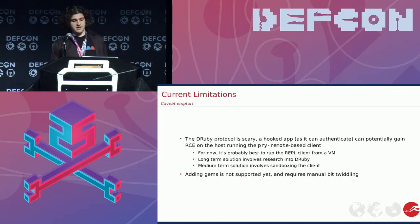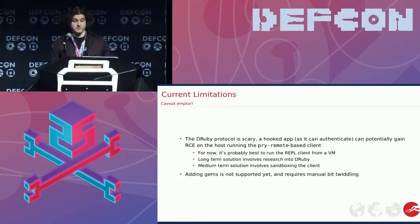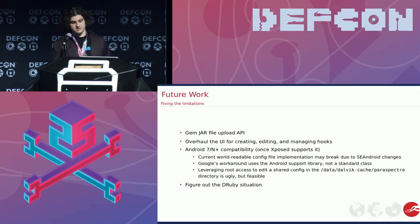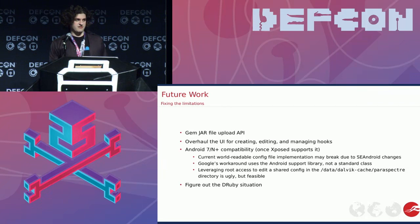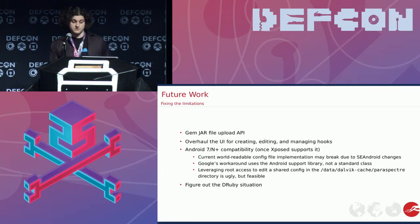Limitations: the DRuby stuff is super scary — I'm going to get to it, that's probably going to be its own talk, since it's just super, super dangerous. Adding gems is not quite supported yet and requires some shenanigans — I'll probably get around to that soon. I might make a UI to do it fancier, or might just make it easier in the build process. The UI could use just a little bit of work. Android 7 compatibility isn't there yet because Xposed doesn't support it yet — if and when it does, I know what I have to fix. If it doesn't, I have some plans on how I can stop using Xposed, but I'd prefer to use it because it's useful for a whole bunch of stuff.